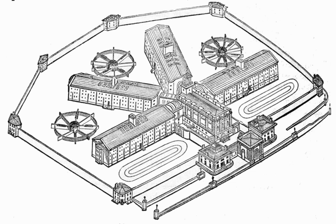Social integration is the attachment to groups and institutions, while social regulation is the adherence to the norms and values of society. Those who are very integrated fall under the category of altruism, and those who are not very integrated fall under egotism. Similarly, those who are very regulated fall under fatalism, and those who are very unregulated fall under anomie. Durkheim's theory attributes social deviance to extremes of the dimensions of the social bond.